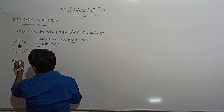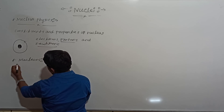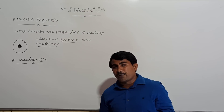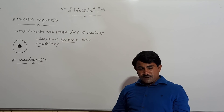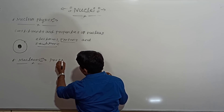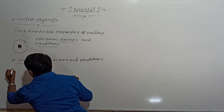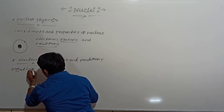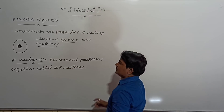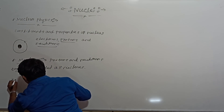The next term is nucleon. In the nucleus, the components present are protons and neutrons. These are called nucleons. Nucleons means the protons and neutrons together. The sum of the protons and neutrons we are calling nucleons.